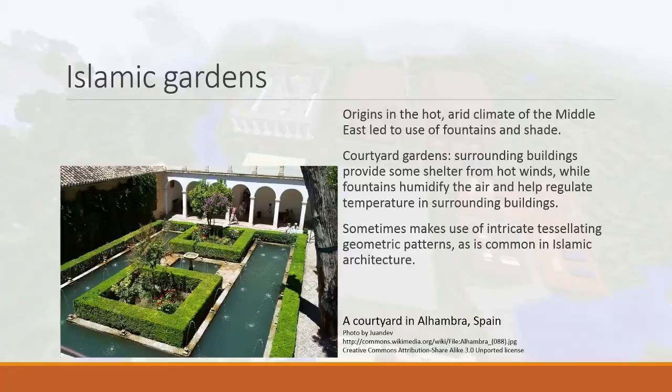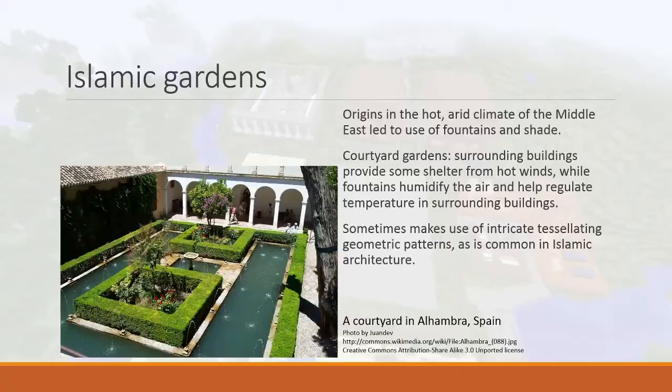The walls surrounding the courtyard garden protect it from the winds, and the fountains humidify the air for the surrounding buildings, so the temperature inside is not as hot as outside. The building and the courtyard garden work together to regulate the local climate and make it more pleasant to live in. Again, the object of desire: in a desert environment, greenery, water, and trees are rare, so you put these things in your garden — lots of green leaves, flowers, and water everywhere.